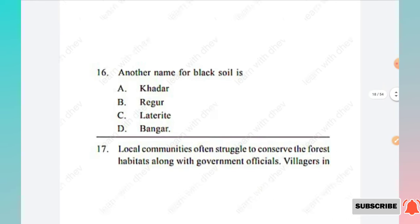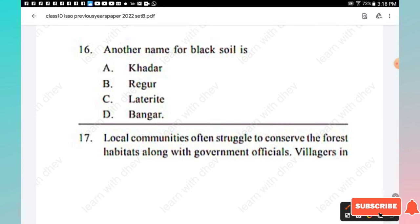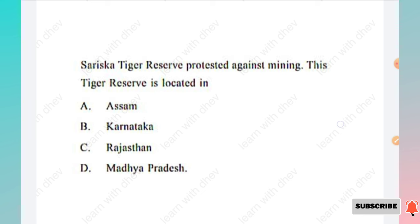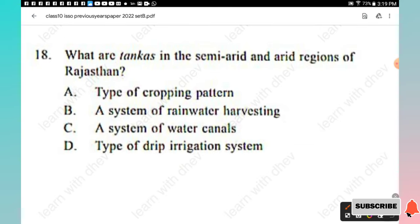The next section is Geography. Question 16: Another name for black soil is — Khadar, Regur, Laterite, Bangar. Question 18: What are tankas in the semi-arid and arid regions of Rajasthan? Options: type of cropping pattern, a system of rainwater harvesting, a system of water canals, type of drip irrigation system. The right answer is Option B, a system of rainwater harvesting.